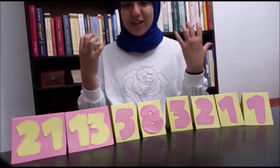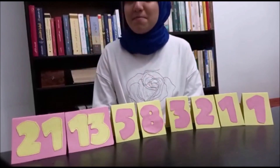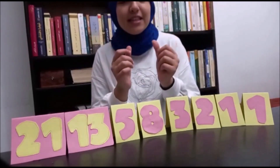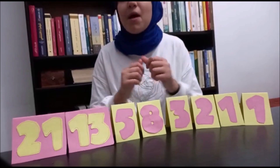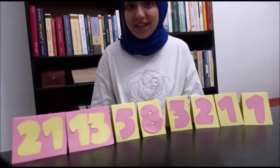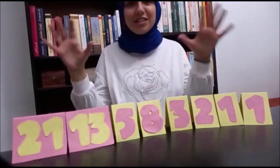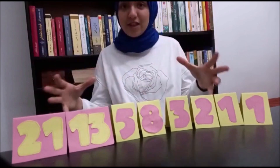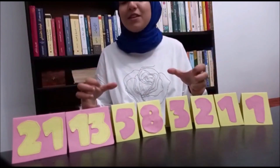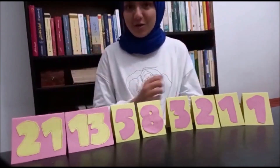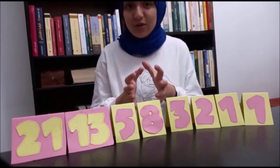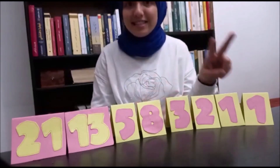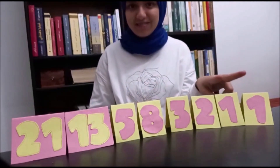Eight centuries ago, the Italian mathematician Leonardo Fibonacci contemplated a problem about rabbits' breeding. What he found was extremely fantastic. He obtained a sequence of numbers named the Fibonacci sequence. As you probably noticed, each number is the sum of the last two digits.